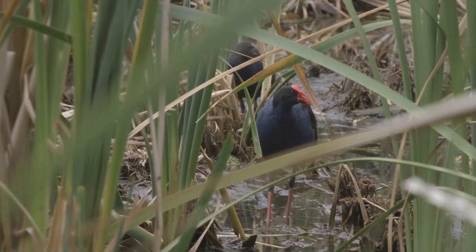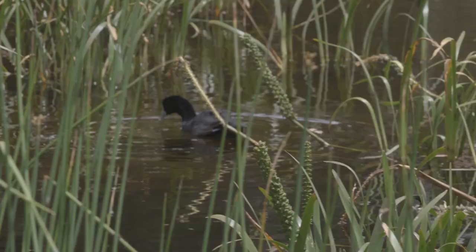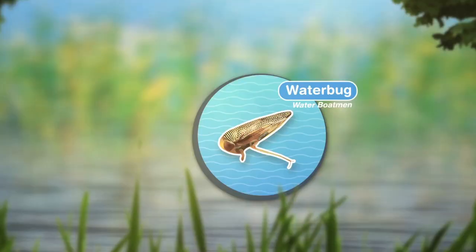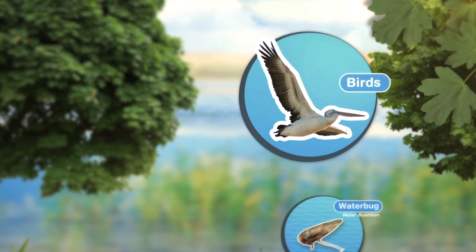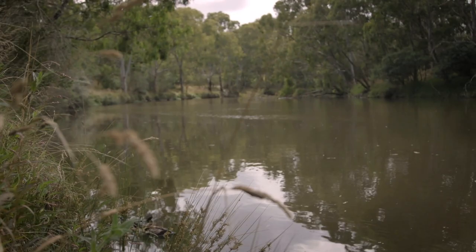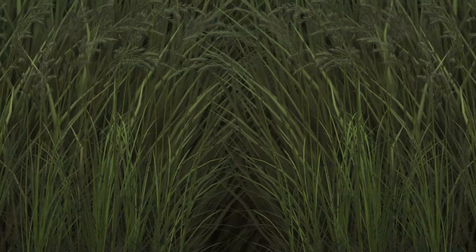Some water bugs eat plant materials and some are predators that will eat other water bugs. Many are eaten by much bigger animals like platypus, birds and fish. Water bugs can help us to learn about how healthy the waterway is, because not all water bugs can live in dirty or polluted water.